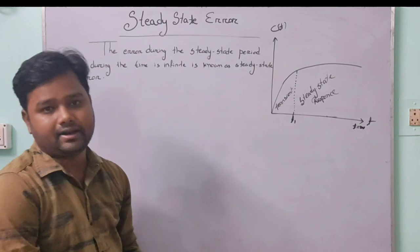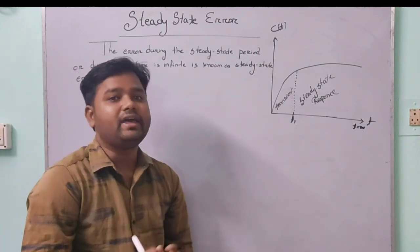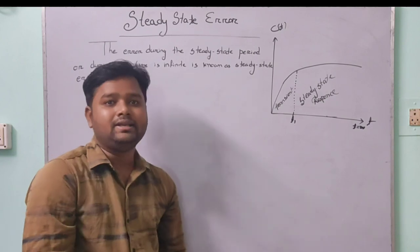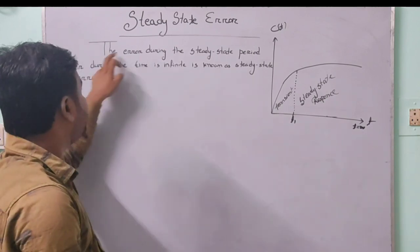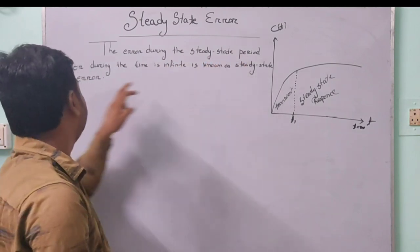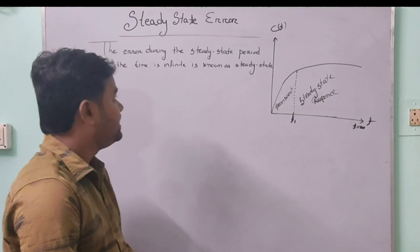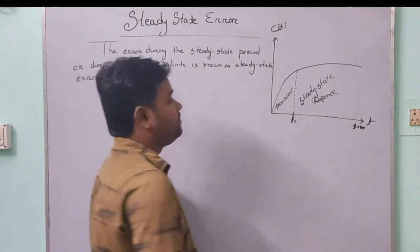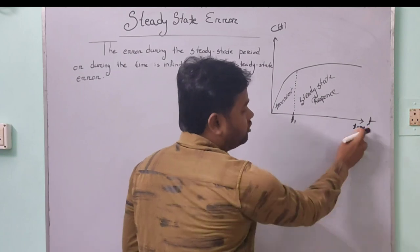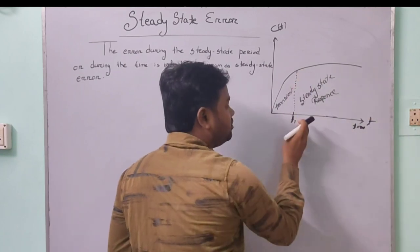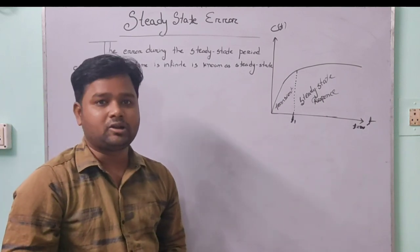Our topic is steady state error. It means when time is equal to infinity, the error that occurs at the output side is known as steady state error. The definition is: the error during the steady state period, during the time is infinity, is known as steady state error. That means from t equal to t1 till t equal to infinity, the error that occurs is known as steady state error.